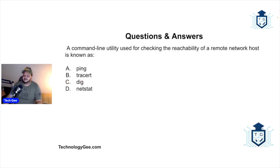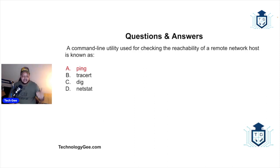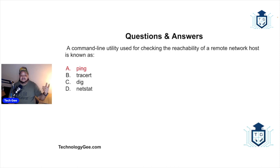A command line utility used for checking the reachability of a remote network host is known as what — ping, traceroute, dig, or netstat? This command would be ping — p-i-n-g. You type ping and then an IP address, and it basically sends out a signal that bounces off the device you're trying to reach to see if it's online. It's almost like an echo, like how submarines send echoes out. It's not establishing connectivity; it's just letting you know the device exists.